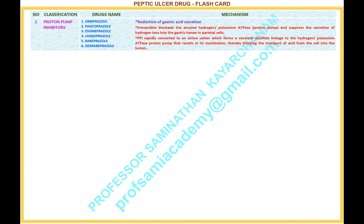Mechanism of proton pump inhibitors: reduction of gastric acid secretion. Detailed mechanism: irreversible blockade of the enzyme hydrogen-potassium ATPase, known as the proton pump, suppressing the secretion of hydrogen ions into the gastric lumen in parietal cells. PPIs are rapidly converted to an active cation which forms a covalent disulfide linkage to the hydrogen-potassium ATPase proton pump, resulting in its inactivation, thereby blocking the transport of acid from the cell into the lumen.